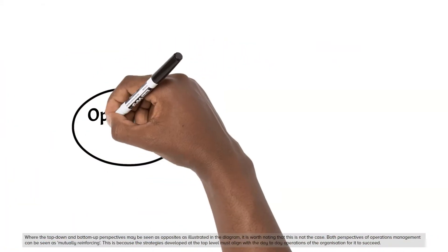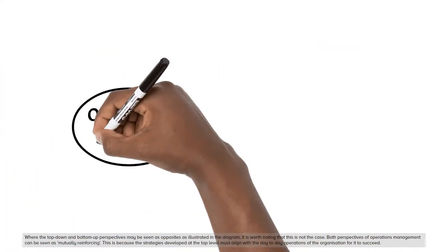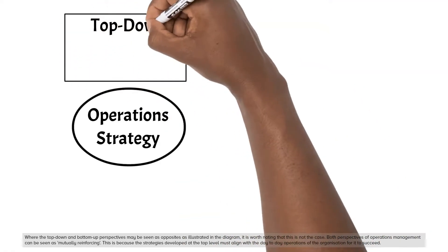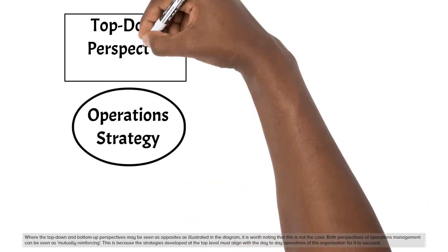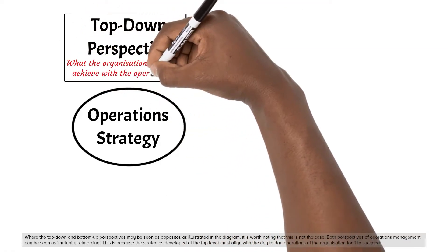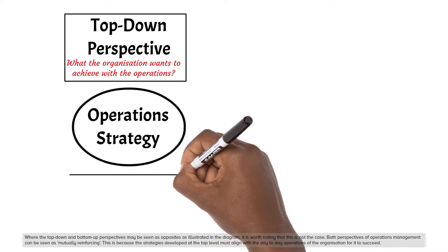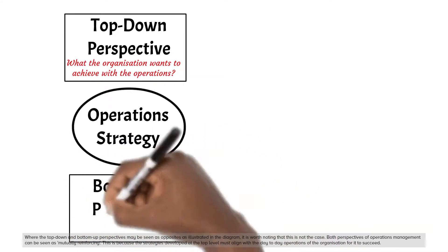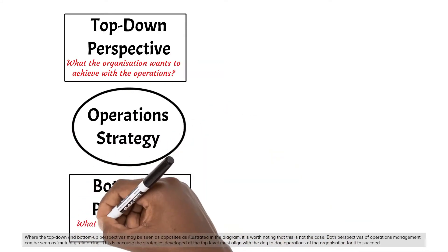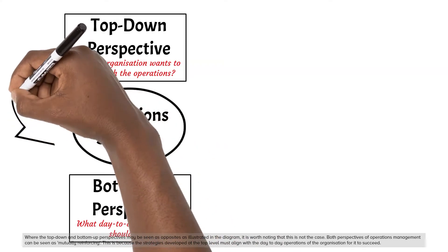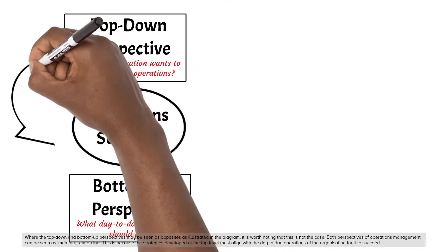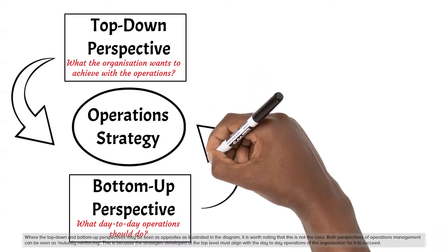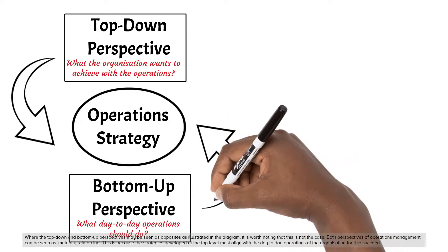Where the top-down and bottom-up perspectives may be seen as opposites, as illustrated in the diagram, it is worth noting that this is not the case. Both perspectives of operations management can be seen as mutually reinforcing. This is because the strategies developed at the top level must align with the day-to-day operations of the organization for it to succeed.